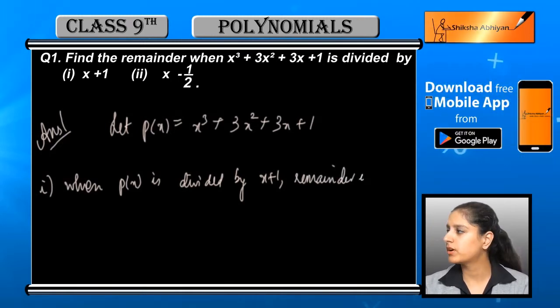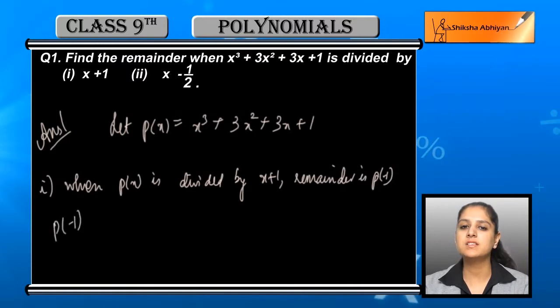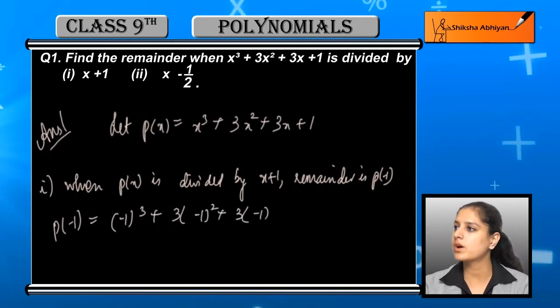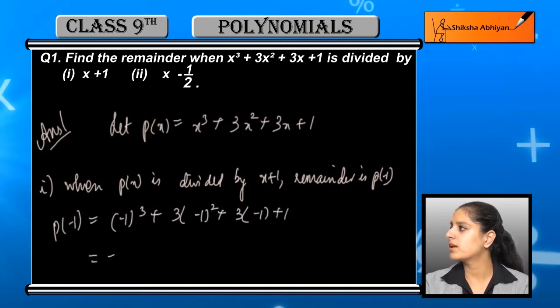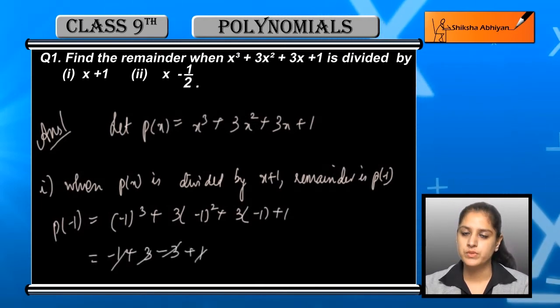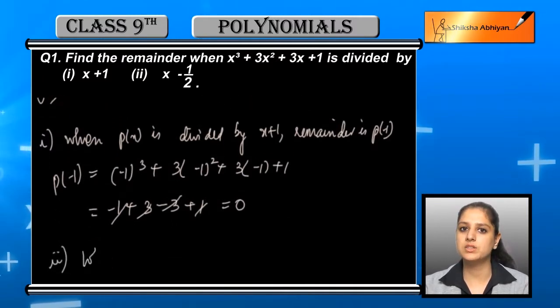We check at x = -1 and find the value: p(-1) = (-1)³ + 3(-1)² + 3(-1) + 1. Ultimately, after solving, we get the answer 0. So the remainder after dividing these two is 0.